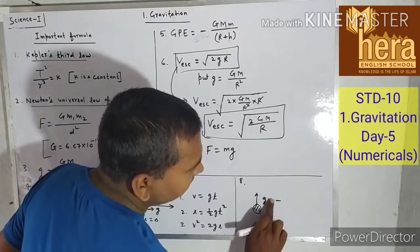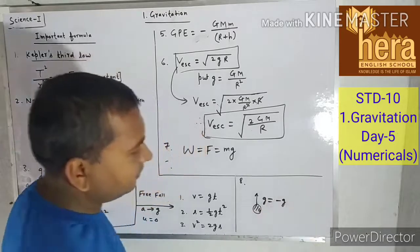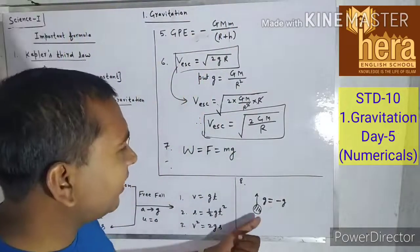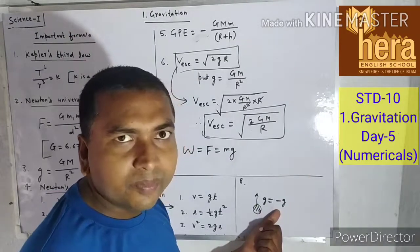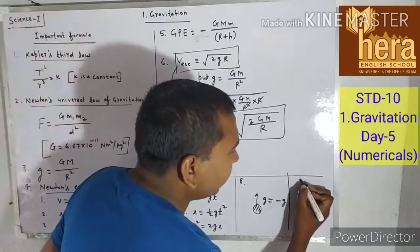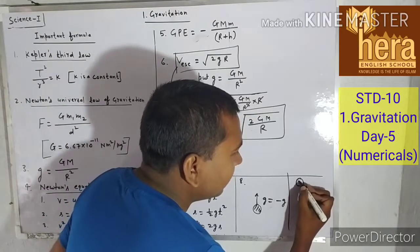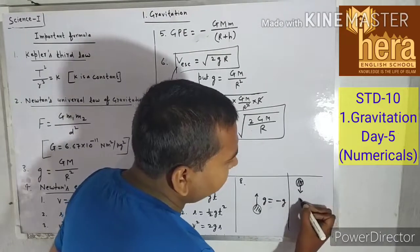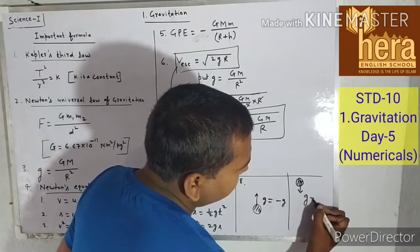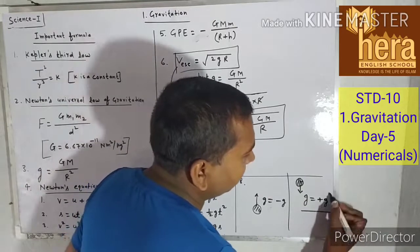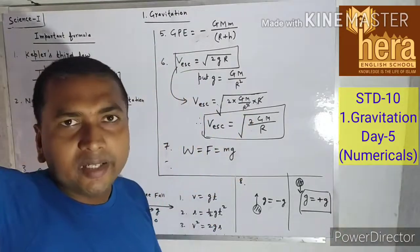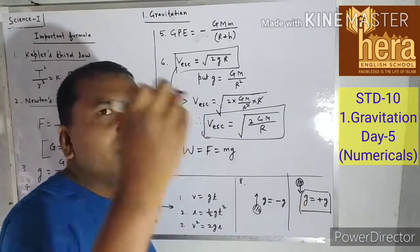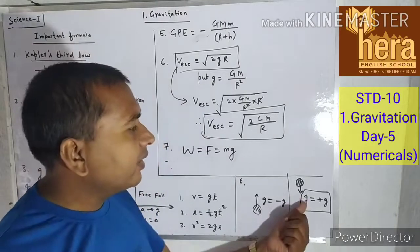This is important for numericals: if you throw a ball vertically upward, in that case take g as negative, i.e., g = −g. And if an object is coming down, in that case g = +g. Always remember — upward motion: g is negative; downward motion: g is positive.